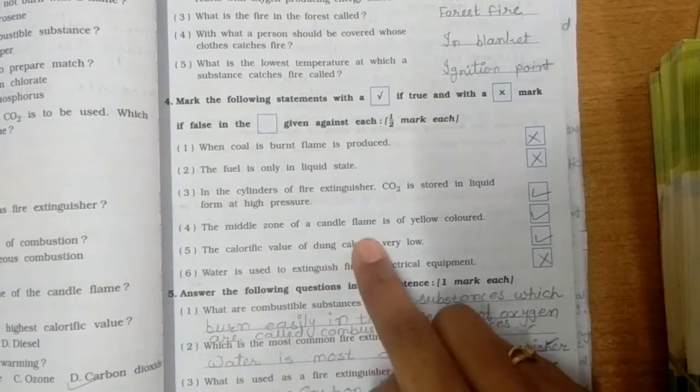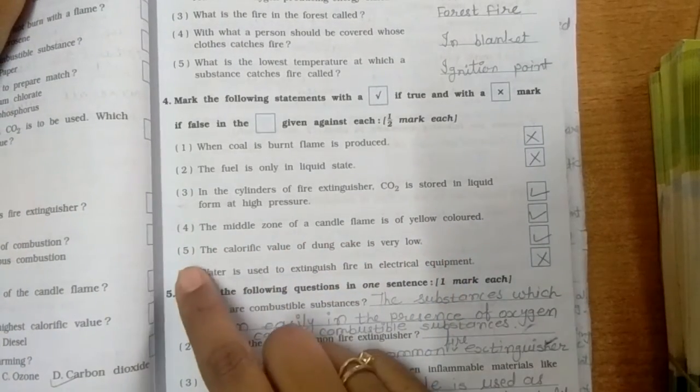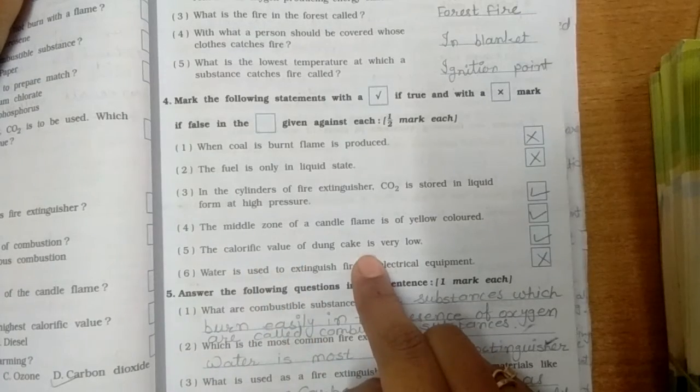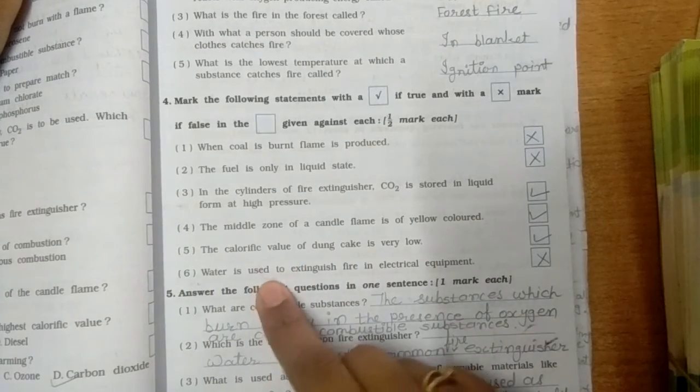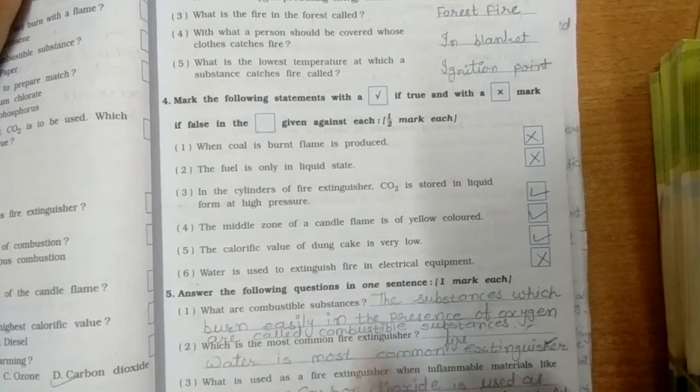Fourth, the middle zone of a candle flame is yellow color? True. Five, the calorific value of dung cake is very low? True. Six, water is used to extinguish fire in electrical equipment? False.